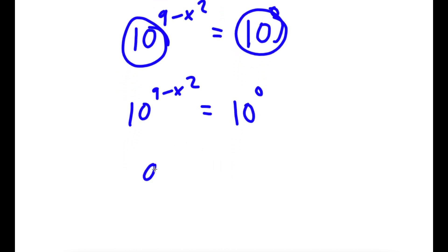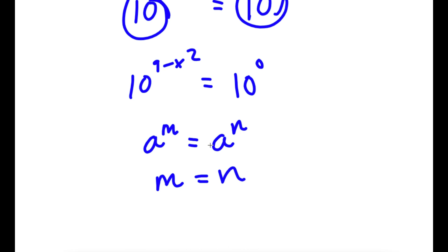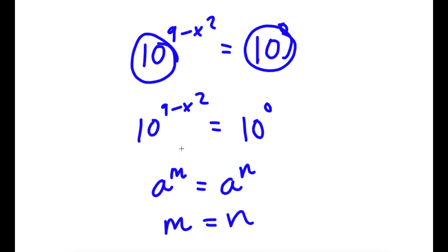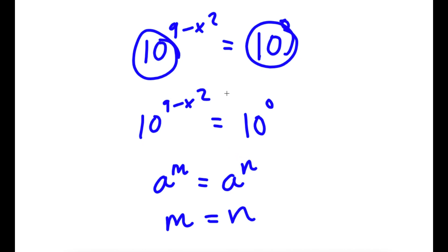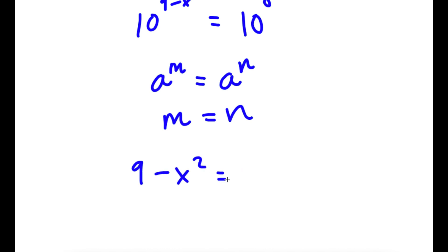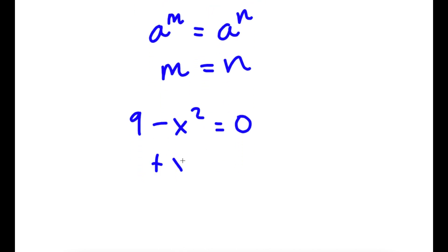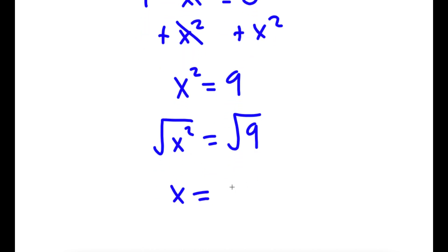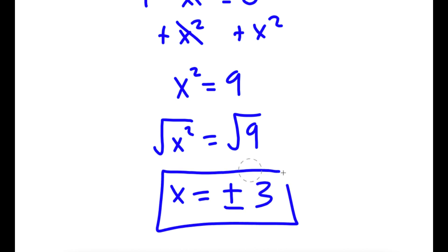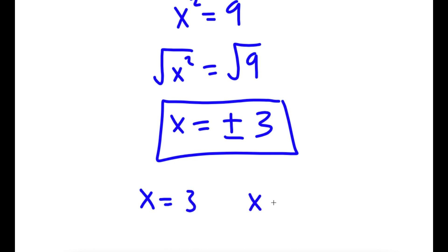If I have something in the form a to the power of m equals a to the power of n, this means m equals n. Because both bases are 10, our exponents are equal: 9 minus x squared equals 0. Adding x squared on both sides, x squared equals 9. Taking the square root of both sides, x equals positive or negative 3. So my two solutions are x equals 3 and x equals negative 3.